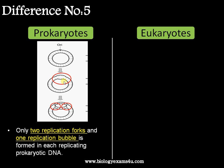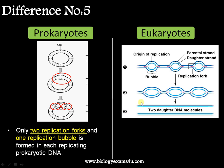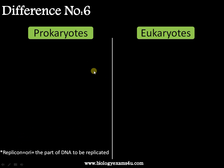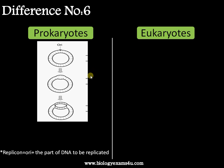In the case of eukaryotes, there are a number of ORIs, so there are many replication forks and also a number of replication bubbles, in order to replicate all these origin of replication regions simultaneously.